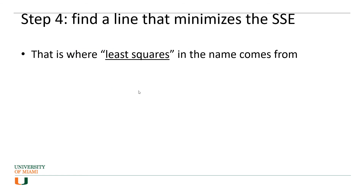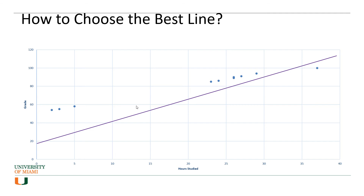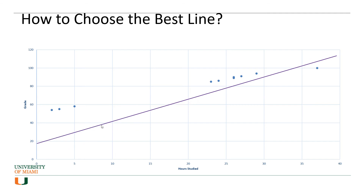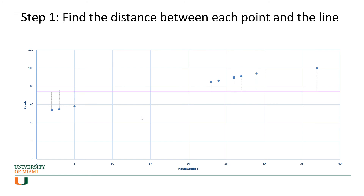Once you have calculated the sum of squared errors, your whole objective is to find the line that minimizes the SSE. Multiple lines would each have a particular SSE. The line that best fits these points is the line with the smallest sum of squared errors — meaning it is the line that is closest to all of these points overall.